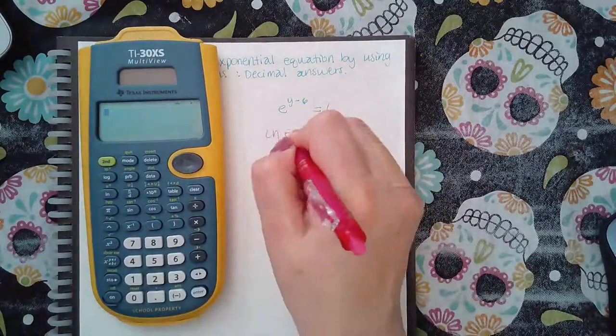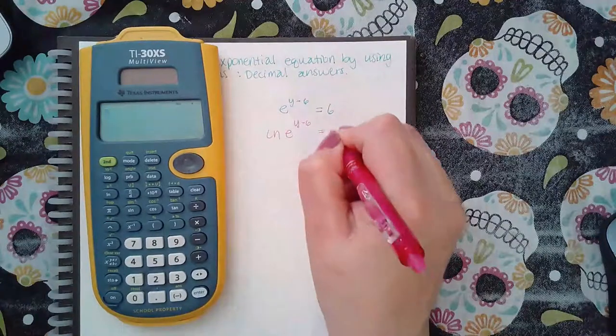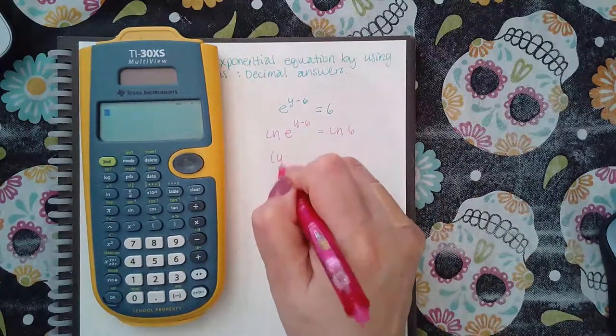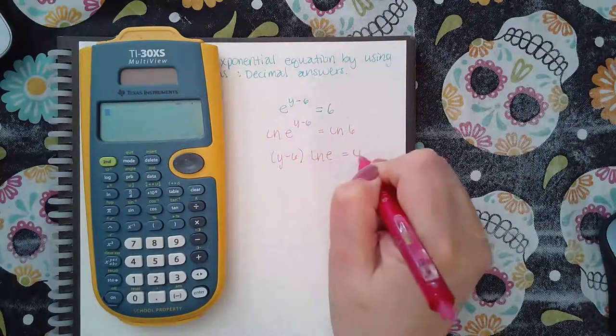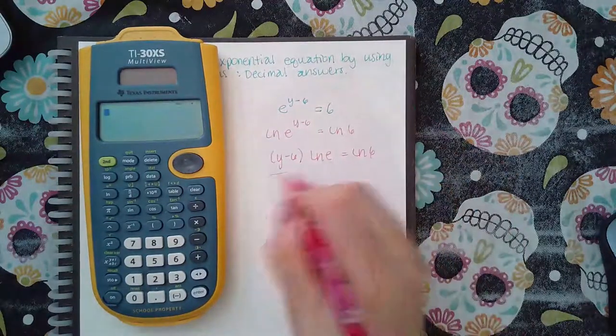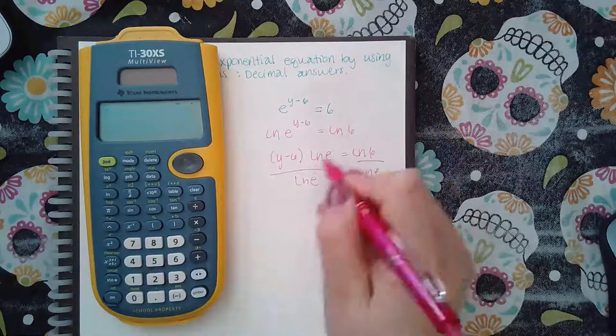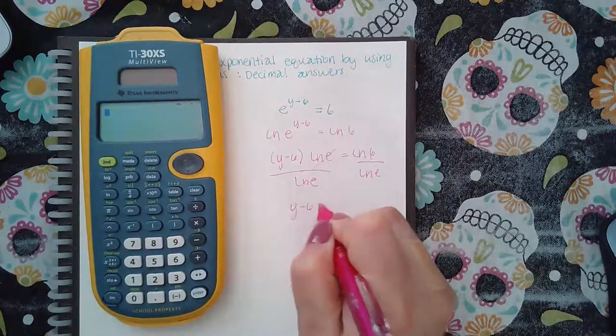Now for the other one, same thing - do the ln on both sides. Then take the exponent and put it in the front. If it's two terms, be sure to put it in parentheses. Then divide by the ln(e) to get the y minus 6 by itself.